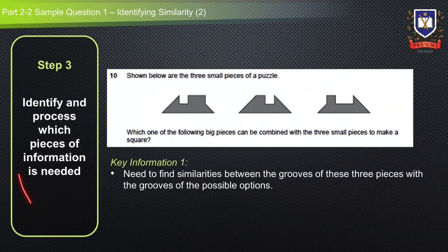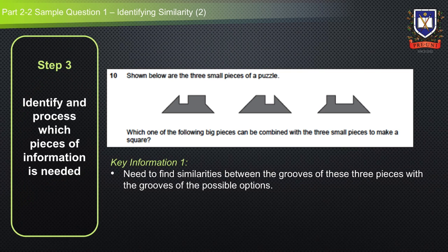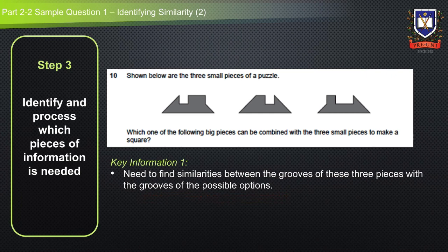Step three is to identify and process which pieces of information are needed. From this question, a key piece of information is that we need to find similarities between the grooves of these three pieces and the grooves of the possible options.